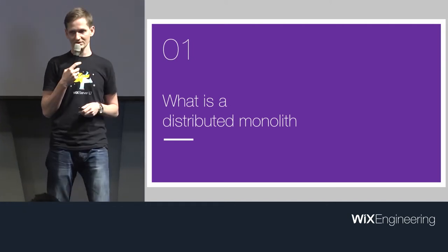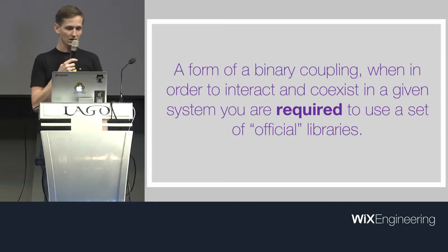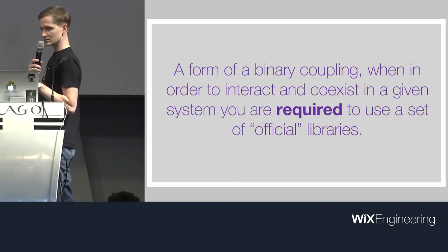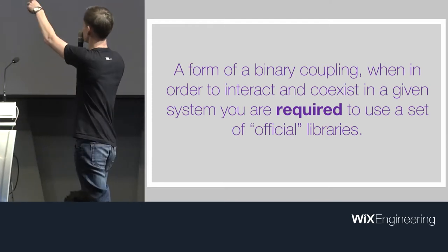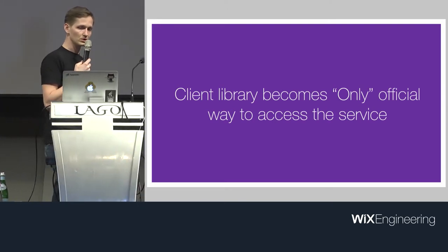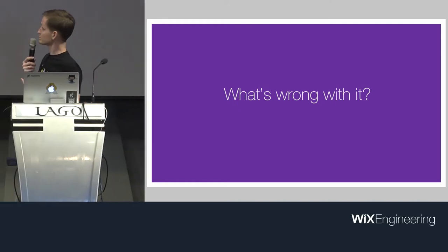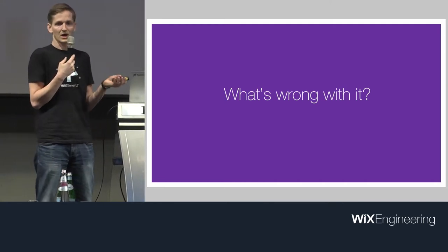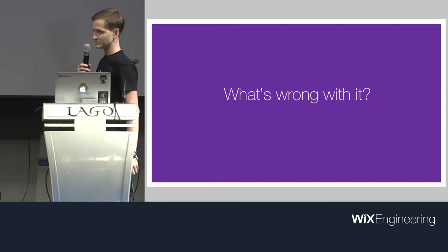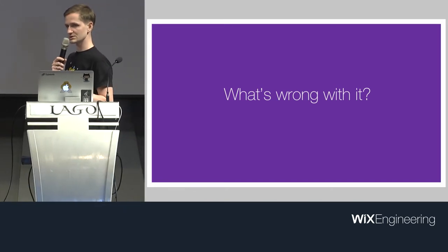There is a thing in the microservice world called distributed monolith. It's a form of binary coupling where, in order to interact and coexist in a given system, you are required to use a set of official libraries — and the important things are: required and official. This is the case when a client library becomes the only way to access a service. Some team created a service and built a library so it would be easy to consume — it's helping, right? Up until the point, and it usually happens, that service logic starts drifting into the client.